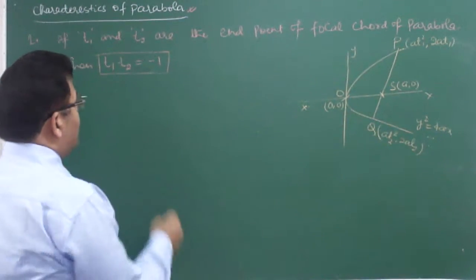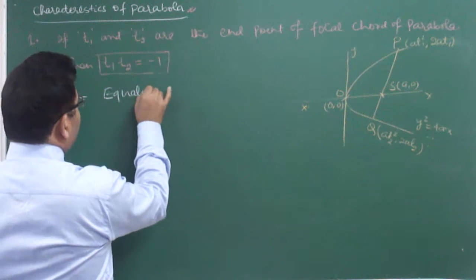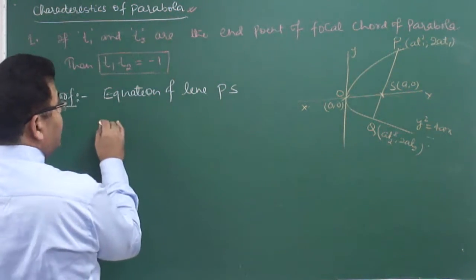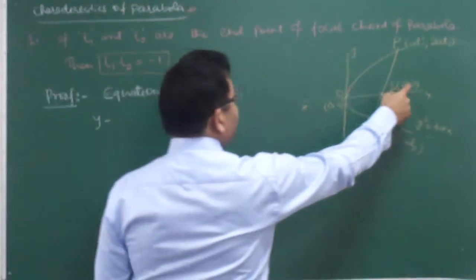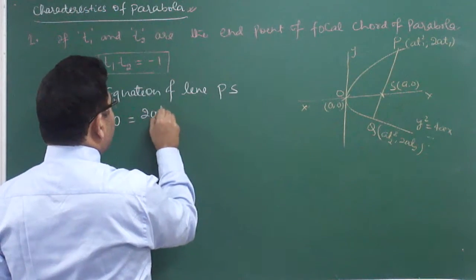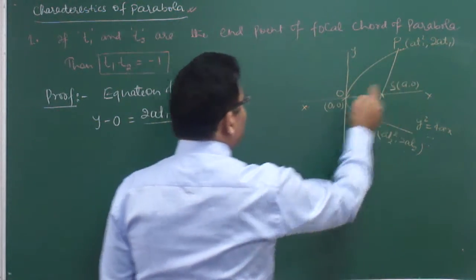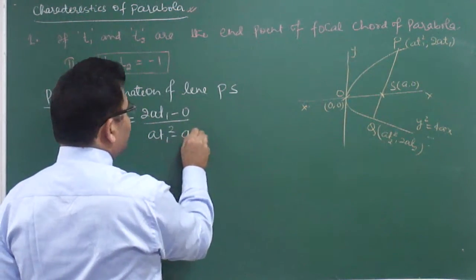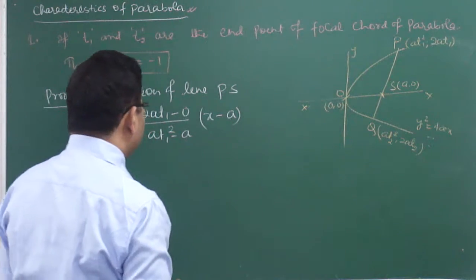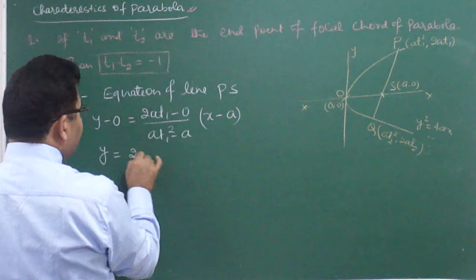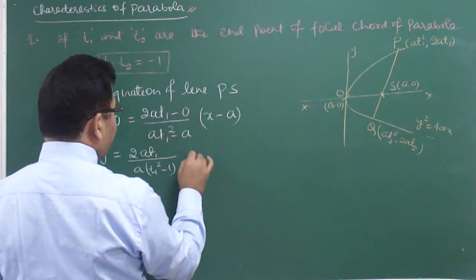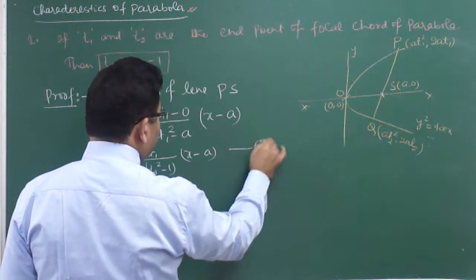This is not a question — it is a statement we can prove and use. Equation of line PS, using two-point form: Y minus Y1 (which is 0) equals (Y2 minus Y1)/(X2 minus X1) times (X minus X1), that is (2AT1 - 0)/(AT1² - A) times (X - A). Simplifying, Y = [2AT1 / (A(T1² - 1))] · (X - A).